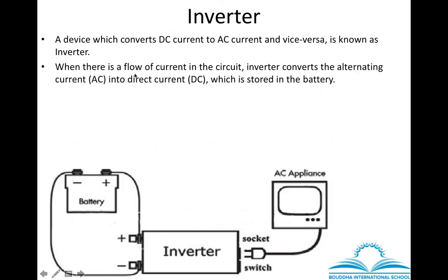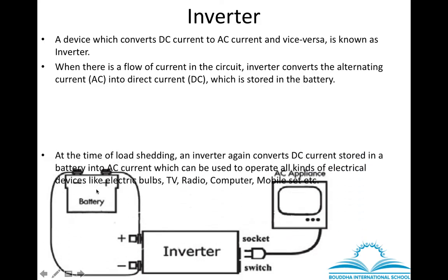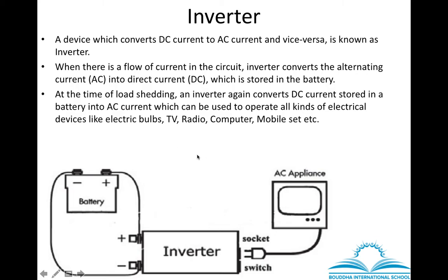When there is power supply, the inverter converts the AC current into DC current, which is stored in the battery. When there is load shedding, the inverter converts the stored DC current in the battery into AC current, which is supplied to appliances like electric bulb, TV, radio, computer, and mobile — all of which consume AC current. This is how the inverter works.